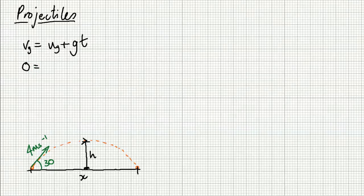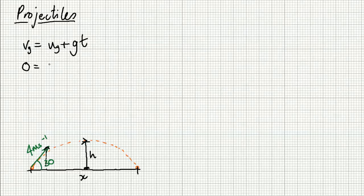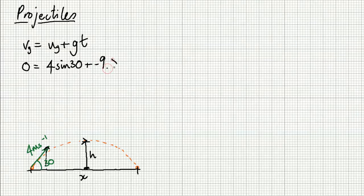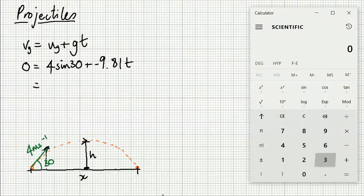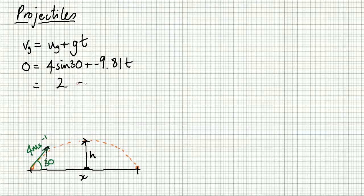What about U then? U is actually the vertical component of this velocity vector here, at 30 degrees to the horizontal. Imagine you are swinging open the angle — you know it's sine for the vertical component if you've got the horizontal angle. So U in the Y dimension is 4 sine 30, plus G which is minus 9.81. You want to work out T, so: 0 equals 4 sine 30 minus 9.81T. Since 4 sine 30 equals 2, we have 0 equals 2 minus 9.81T.